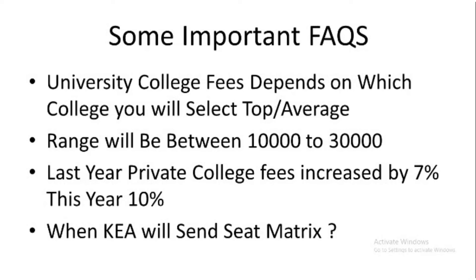Regarding when KEA will send the seat matrix — this is important because there must be a seat available at a particular college for you to get it. Most probably they will send the seat matrix next week. In future videos we will cover top 10 engineering colleges of Karnataka, college rankings for rank ranges 50,000–1,00,000, and how to do option entry and select a good college. Thank you for watching — if you find our content informative, please like, subscribe, and share.